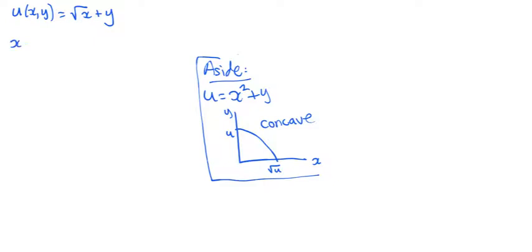In this utility function, x is non-linear and y is linear. How can we tell? Let's determine the marginal utilities and see what we get.